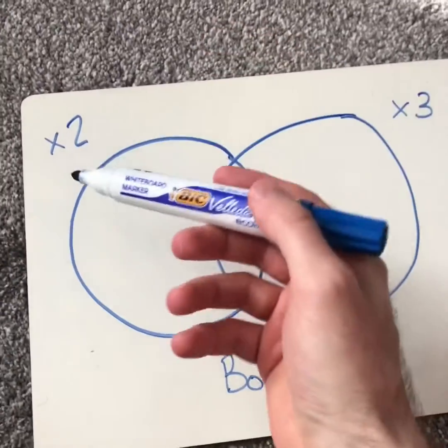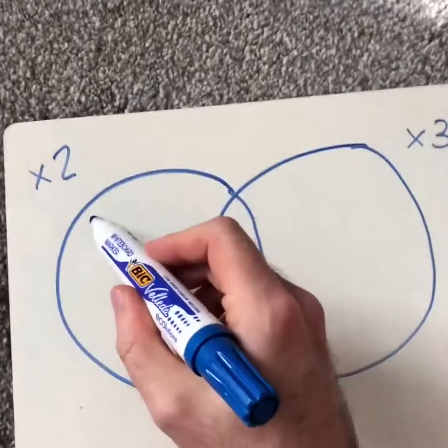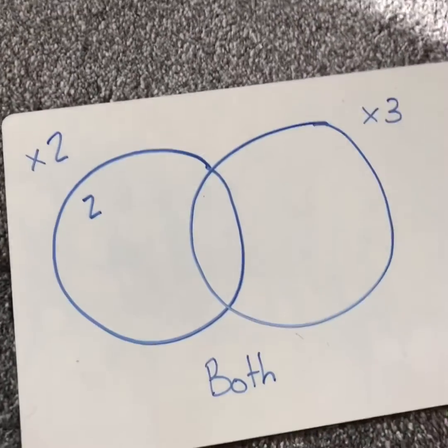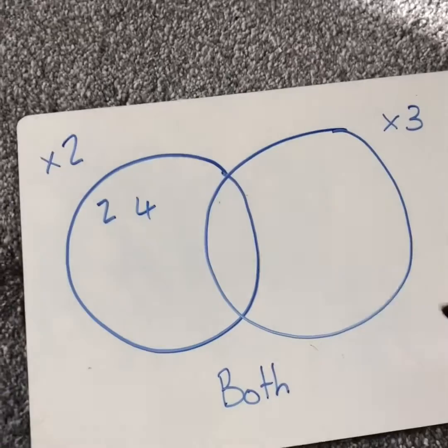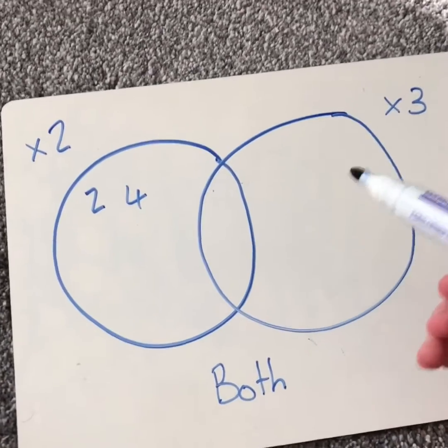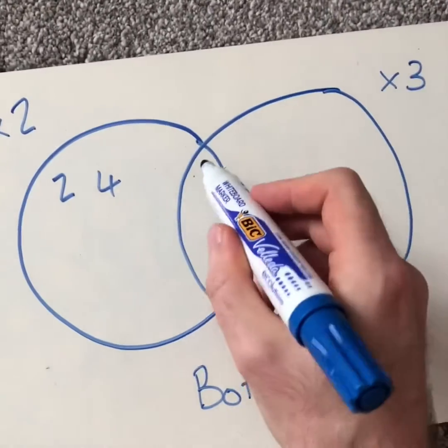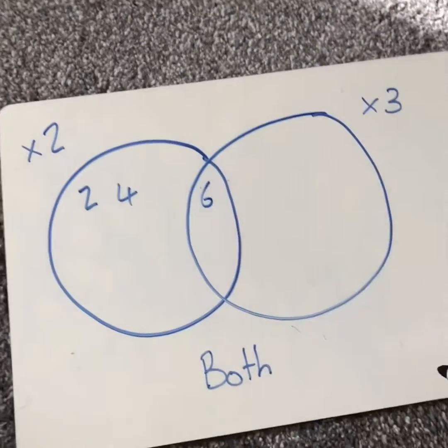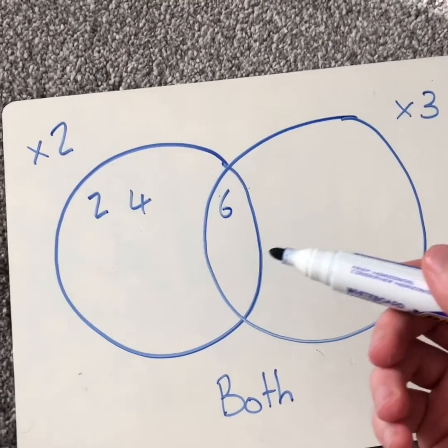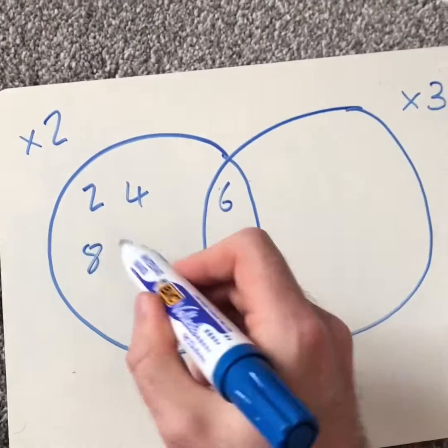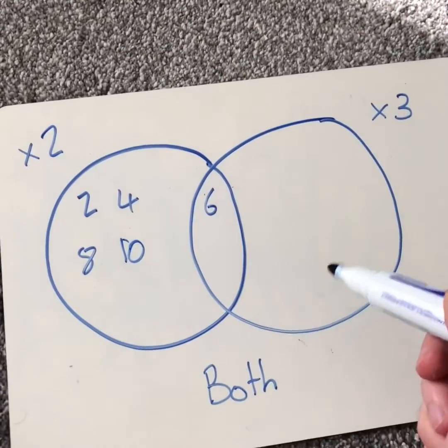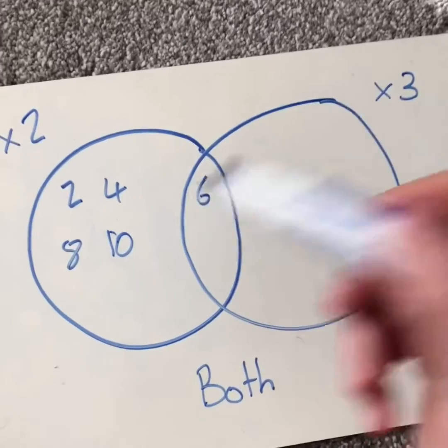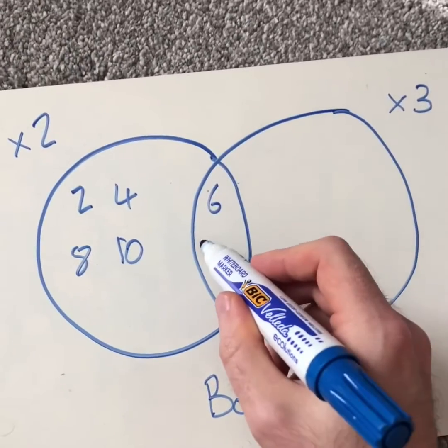So I start off by thinking, right, two times table is smaller. So I'll say two. Two is not in the three times table. Four. Four is not in the three times table. Six. Six is in the three times table. It's in the two and the three, two times three. So we put six there. Eight. Three doesn't go into eight. Ten. Not. Twelve. Three does go into twelve. So I put twelve in the middle.